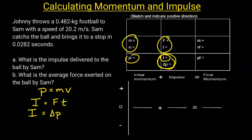One other thing that can be helpful to understand is that the impulse is equal to the change in momentum, which can be written as PF minus PI. And if I move the PI to the left-hand side, I get PI plus the impulse equals PF.